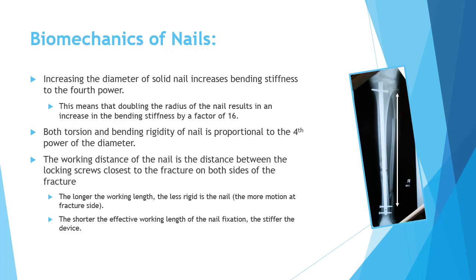Now we'll speak about the biomechanics of the nail. Both the bending and torsion rigidity of the nail are related to the fourth power of the diameter. For example, if you double the diameter of the nail, the bending and torsion rigidity will increase 16 times — because 2×2×2×2 equals 16. Some textbooks say torsion is related to the fourth power and bending to the third power, but bending is also related to the fourth power in the case of the nail.